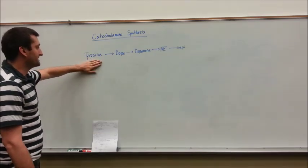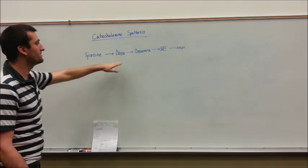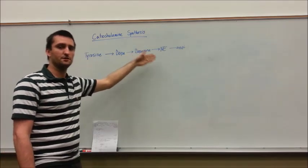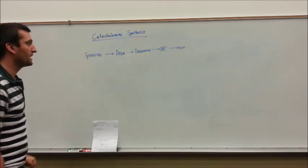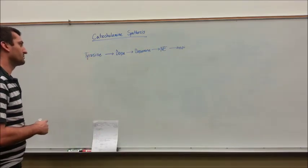Basically, we're going to start with the amino acid tyrosine and that's going to get converted to dopa, which gets converted to dopamine, norepinephrine, and then finally epinephrine.